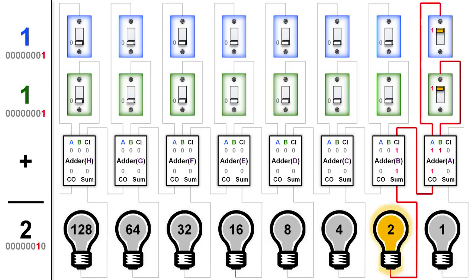Now let's see what happens when we add 1 plus 1. In adder A, the A and B inputs are both 1 and the carry-in wire is off, so it's 1 plus 1 plus 0, which in binary equals 10, causing the carry-out wire to be on and the sum wire to be off. So then in adder B, the A and B inputs are 0, but the carry-in input is 1, so the sum line on adder B is on, causing the 2 lightbulb to light up. So 1 plus 1 equals 2.